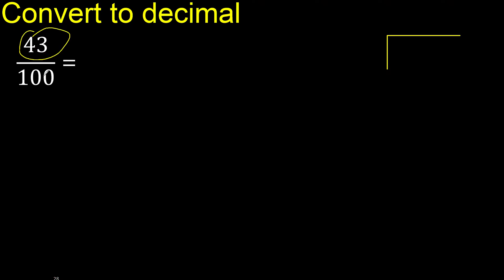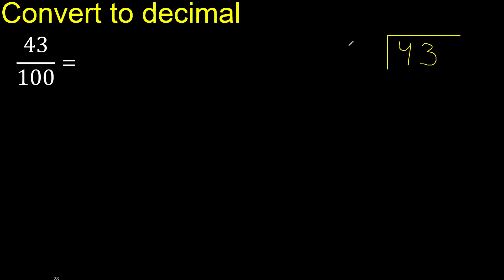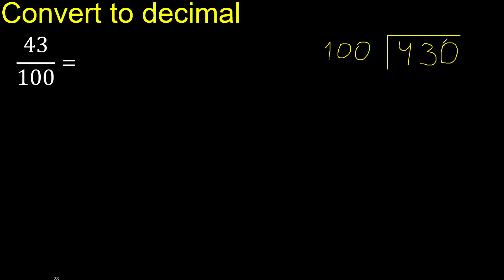43 divided by 100. 43 is less, therefore complete — always complete with 0. Here, 0 point. Is not less.